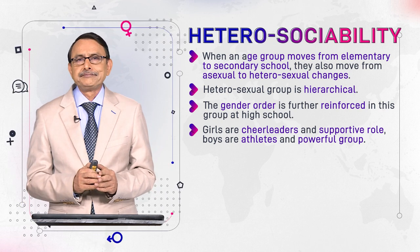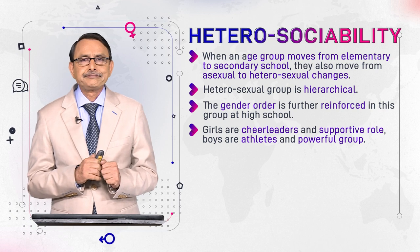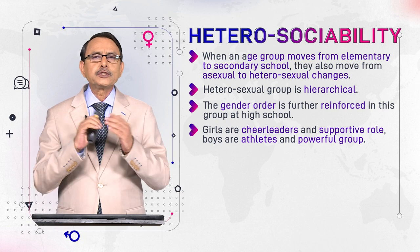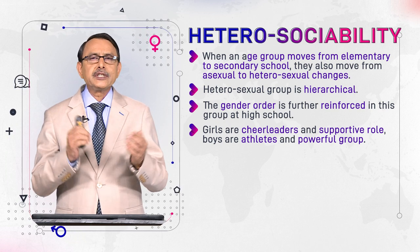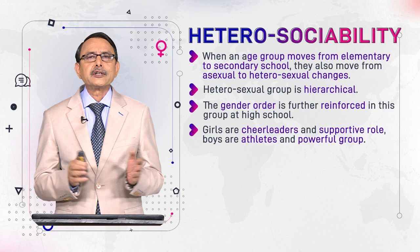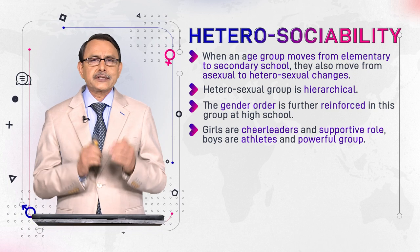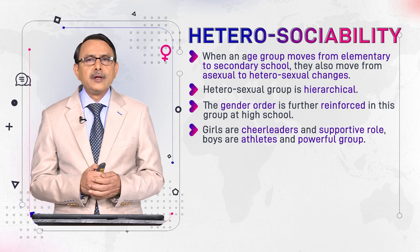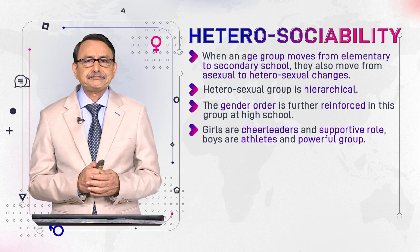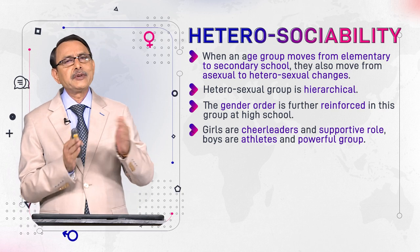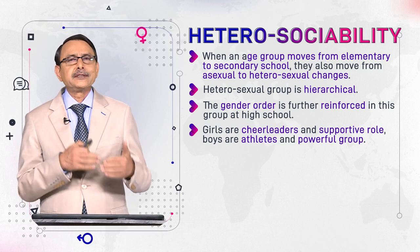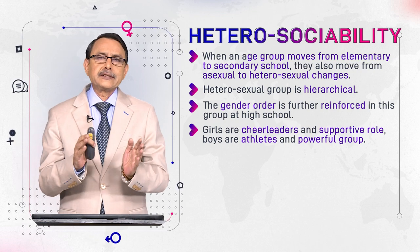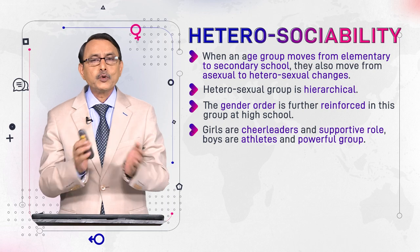Girls, for example, when they are at school, they are in a supportive role. If there is a sports event, what would be their role? They would be sitting around the playground; they would be cheerleaders, boosting and encouraging the team and players. And boys would be the players — the powerful role is attached with them during the sports event.